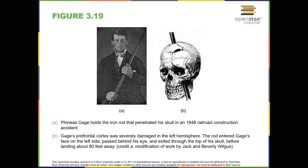Probably the most famous case of frontal lobe damage is that of Phineas Gage. On September 13, 1848, Gage, who was age 25, was working as a railroad foreman in Vermont. He and his crew were using an iron rod to tamp explosives down into a blasting hole to remove rock along the railway's path. Unfortunately, the iron rod created a spark and caused the rod to explode out of the blasting hole into Gage's face and through his skull, as shown in figure 3.19.